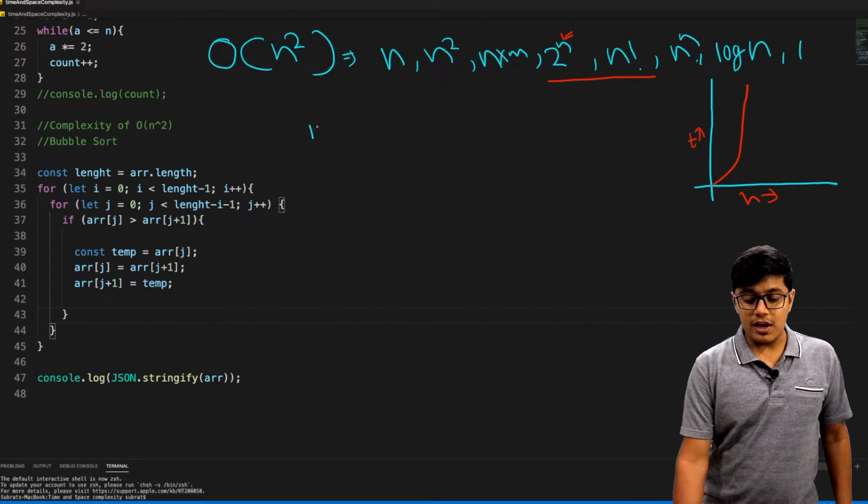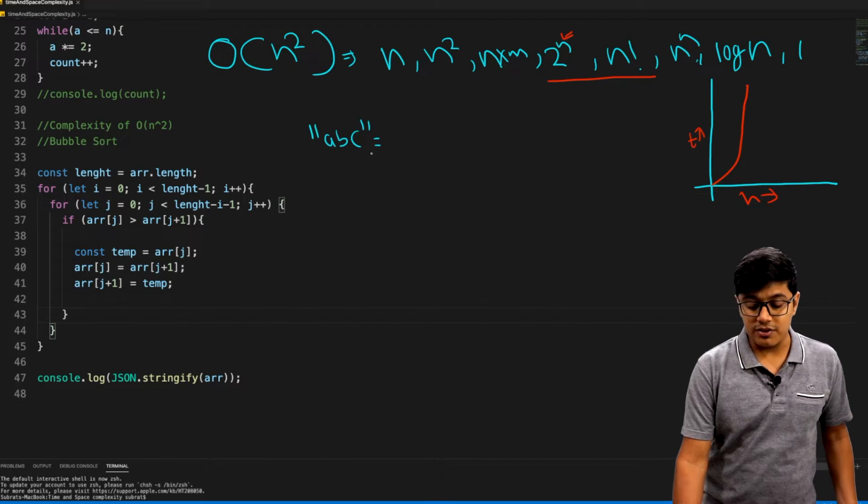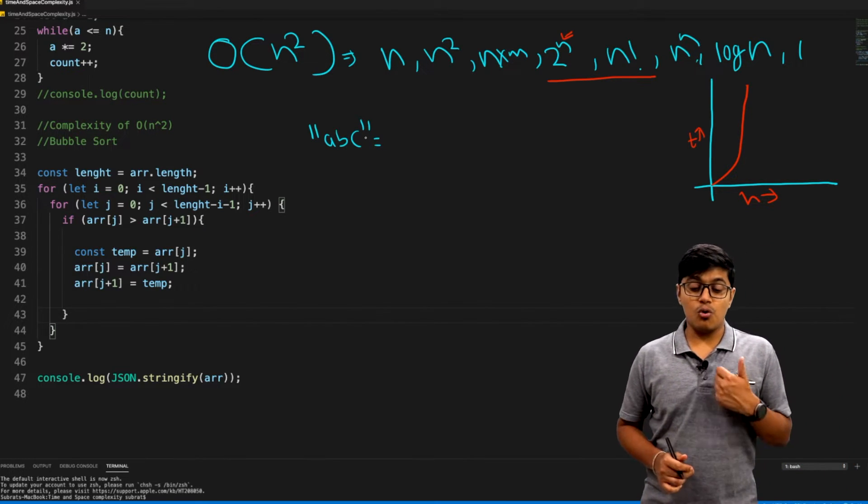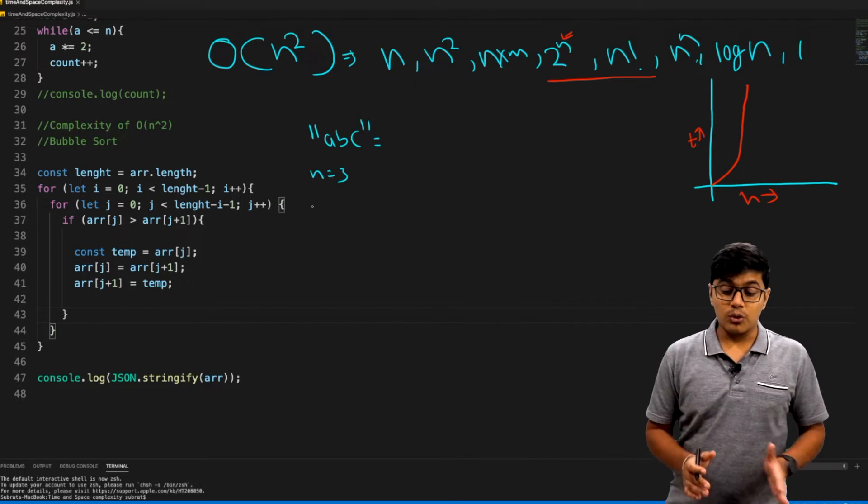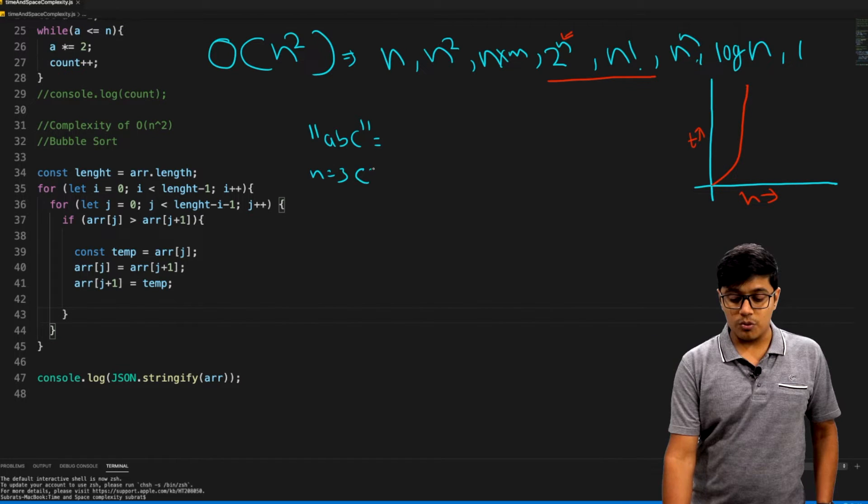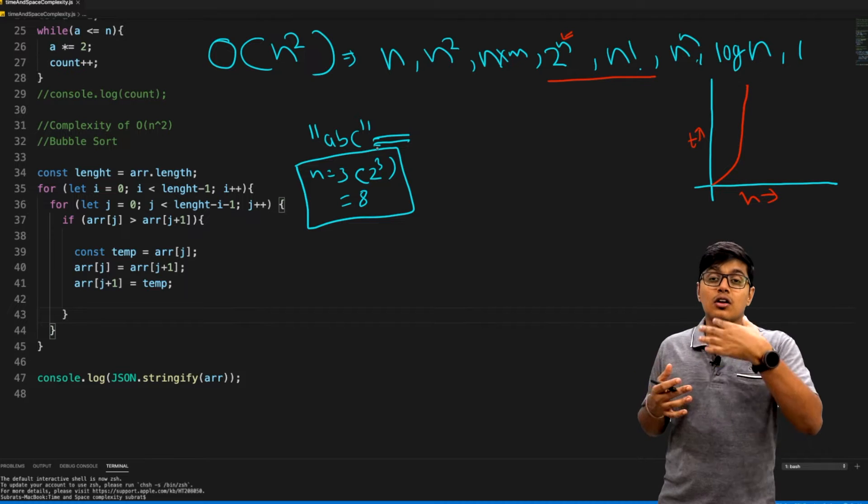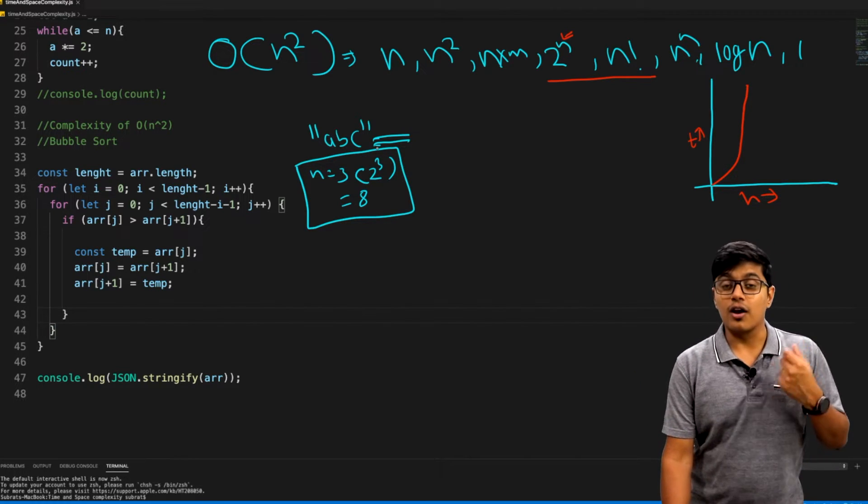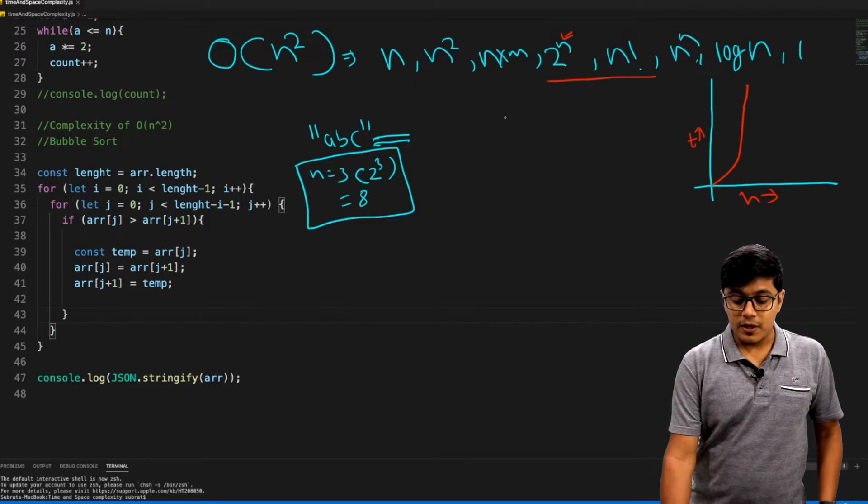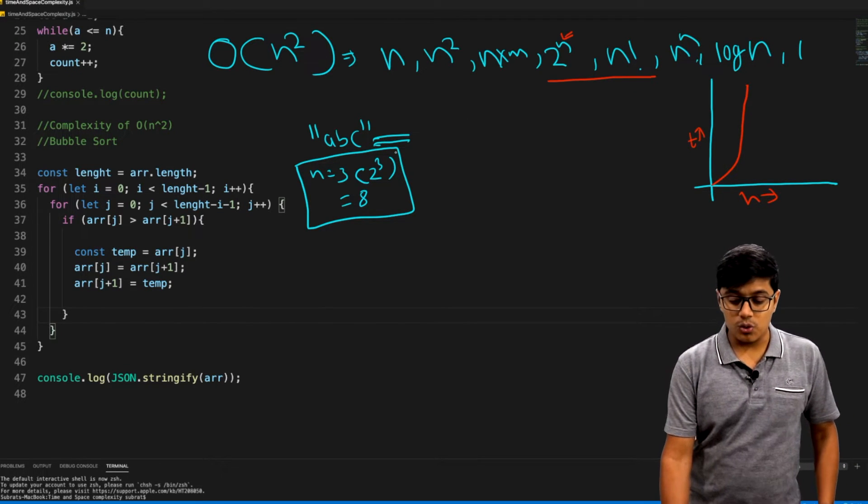For example, we'll check a string ABC. This string has three values, so n here will be 3. Now 2 to the power n will be 2 to the power 3, that will be 8. What is 2 to the power n? It's finding the combination in a string. That's the example of exponential complexity.